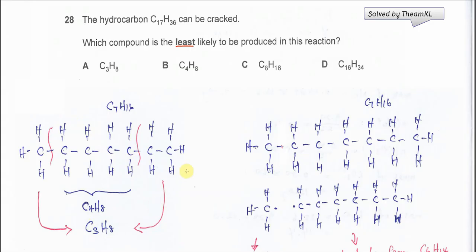And here it will form the C4H8. Which means, if C7H16 is able to form the C3H8 and C4H8, therefore, the shorter one, like C7H16, also can form this. Therefore, A and B always can form and it will form in normal amount.